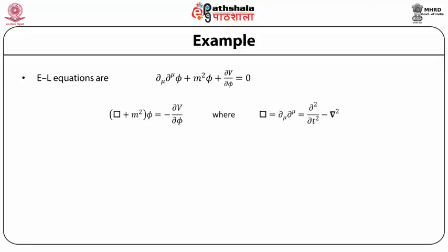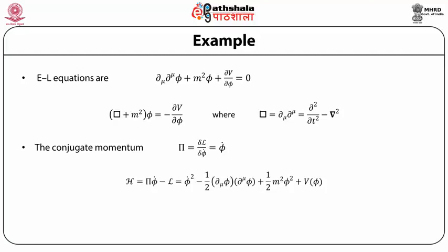This gives (□ + m²)φ = −∂V/∂φ, where the d'Alembertian □ = ∂_μ ∂^μ = ∂²/∂t² − ∇². The conjugate momentum π = δℒ/δφ̇ = φ̇. The Hamiltonian density H = π φ̇ − ℒ = φ̇² − (1/2)(∂_μ φ)(∂^μ φ) + (1/2)m²φ² + V(φ), which gives H = (1/2)φ̇² + (1/2)(∇φ)² + (1/2)m²φ² + V(φ).